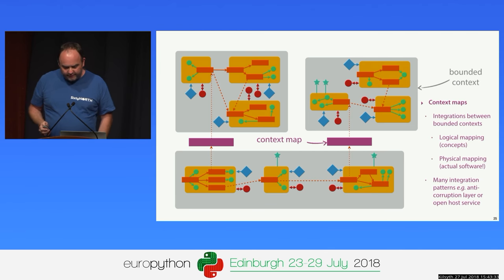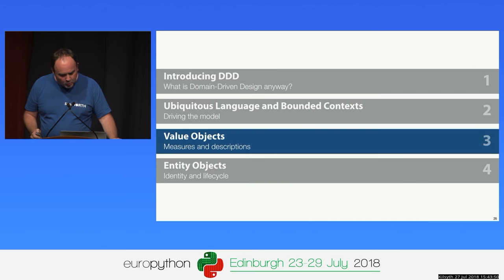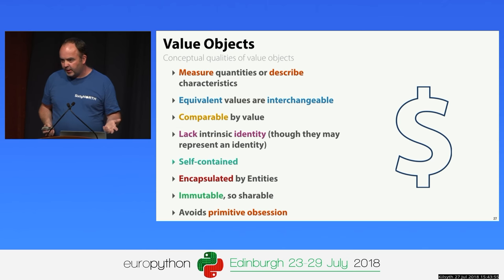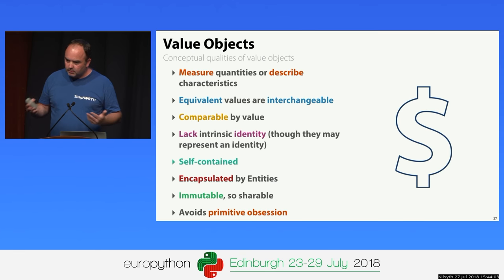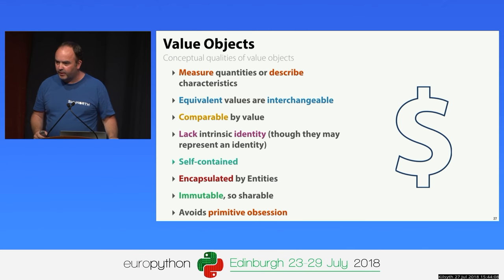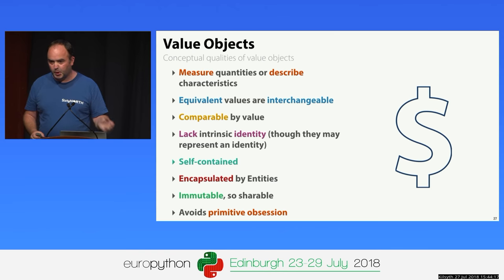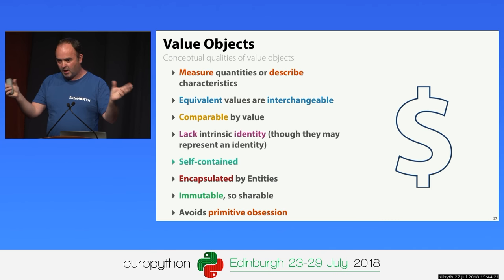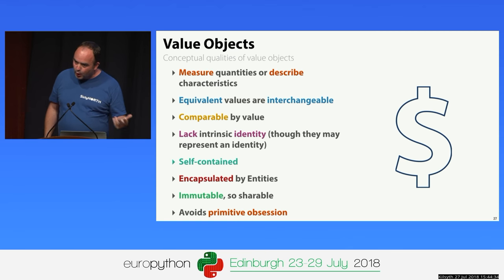Let's go back and look at value objects — the simplest pattern in tactical domain-driven design. Value objects are used to measure and describe things in the domain, like a currency value or a telephone number. Equivalent values are interchangeable; we don't actually care about the identity of the object, we care about the value. They're comparable by value and lack an intrinsic identity. If we have a string containing someone's name and another string with the same name, the fact that they're equal is fine. They're self-contained and normally encapsulated and owned by entities.